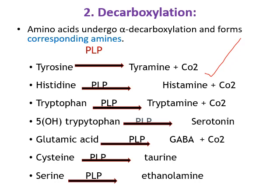Serotonin is synthesized from 5-hydroxytryptophan, which undergoes decarboxylation to form serotonin — generally synthesized from tryptophan. Serotonin is a neurotransmitter that stimulates cerebral activity. Melatonin is a sleep-inducing substance involved in regulation of the circadian rhythm of the body.